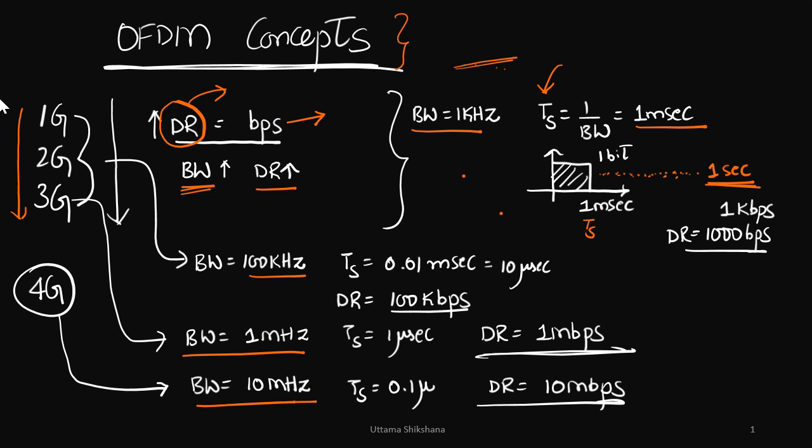Now, if we consider the bandwidth of hundred kilohertz in 2G, then symbol duration is 10 microseconds and your data rate will become 100 kbps. So from 1 kbps, it is achieved around 100 kbps. These values are just examples to show the concept.